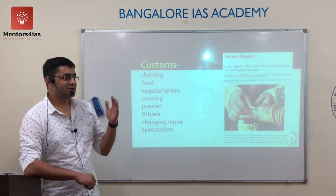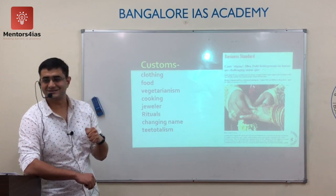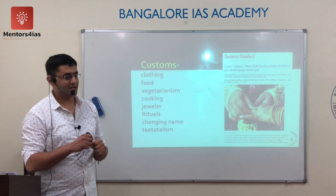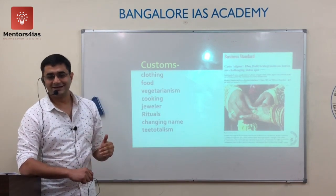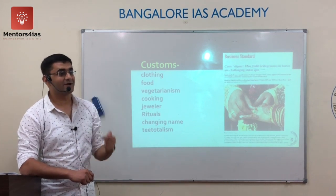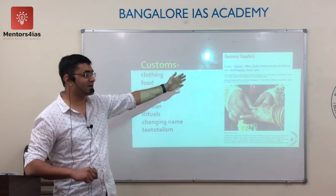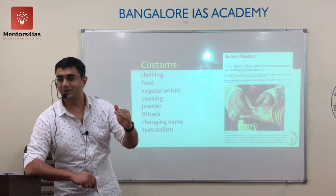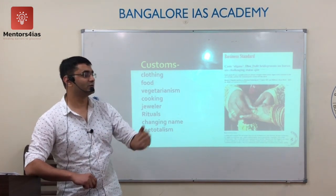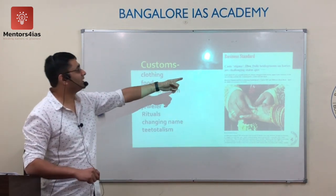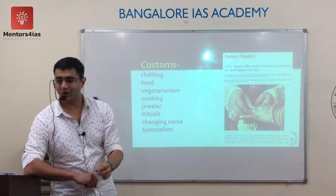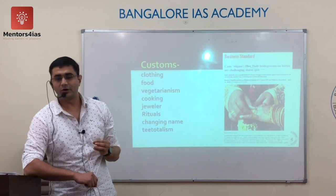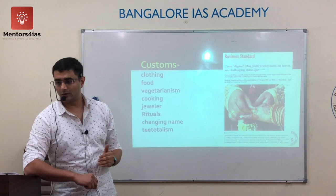Many lower castes across India follow upper caste clothing, food habits — giving up non-vegetarianism and taking up vegetarianism — cooking patterns, jewelry, rituals, name changes, and teetotalism (giving up alcohol). For example, the Rajputs or Kshatriyas bring the groom on horse, which was restricted to the Kshatriya class. But many lower castes today try to follow that practice, and there is resistance from upper castes — in places like Rajasthan, there is even violence when lower castes try to bring the bride in a palanquin or groom on horseback.